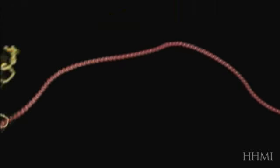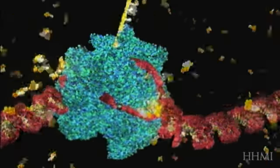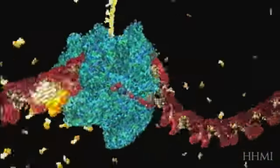The blue molecule racing along the DNA is reading the gene. It's unzipping the double helix and copying one of the two strands.